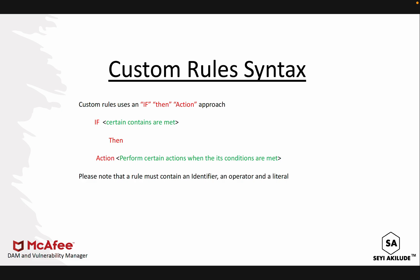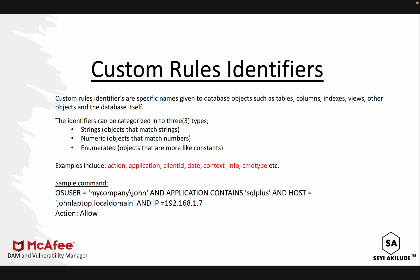We also need to know that every rule will have an identifier, an operator, and also a literal. The identifier speaks to specific objects — for example, an IP could be defined as an object, a command type could be defined as an object, a client ID or a table can also be defined as an object. Custom rules identifiers are the specific names given to database objects — like a table, a column, or an index. There are two types of identifier categories: string, and numeric and enumerated.